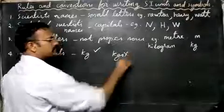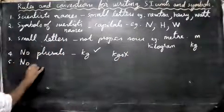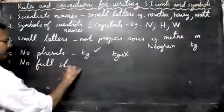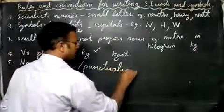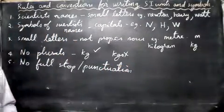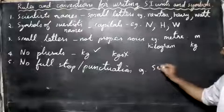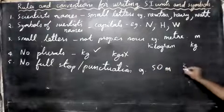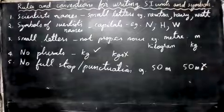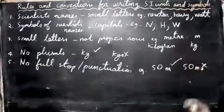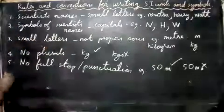The fifth rule: no full stop or punctuation should be used after a unit symbol. Punctuation marks like commas and apostrophes should not appear. For example, writing '50 m' is correct, but writing '50 m.' with a dot is wrong.